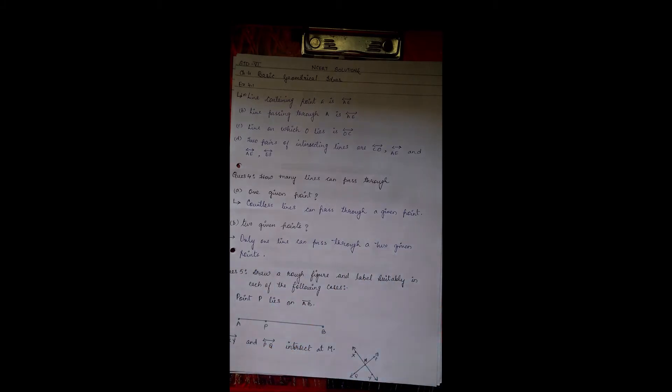Question fifth: draw rough figure and label suitably in each of the following cases. Point P lies on line segment AB. So line segment AB is drawn and point P is plotted on it. Line XY and line PQ intersect at M. So these are the two lines intersecting at the point M.